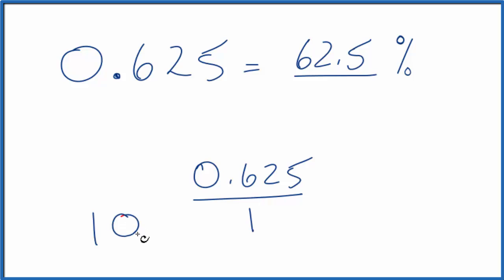But now if we multiply the bottom here by 100, and we'll have to multiply the top too since 100 over 100 is just 1, we're not changing the value.